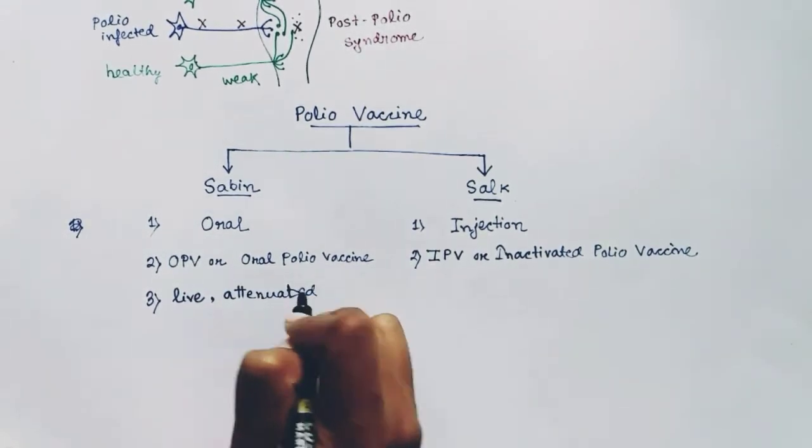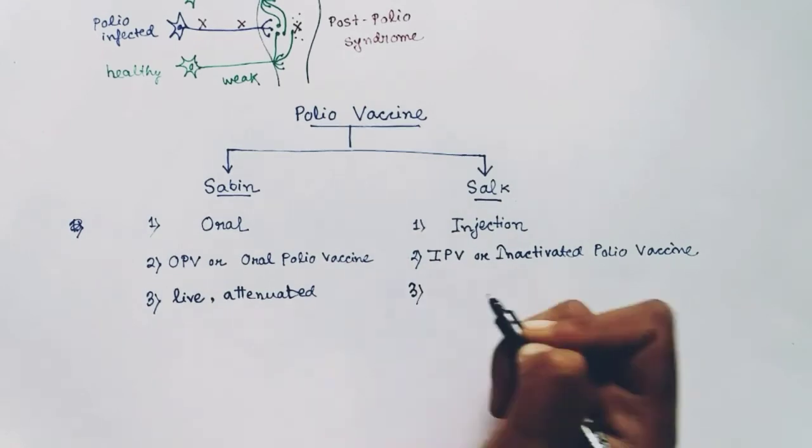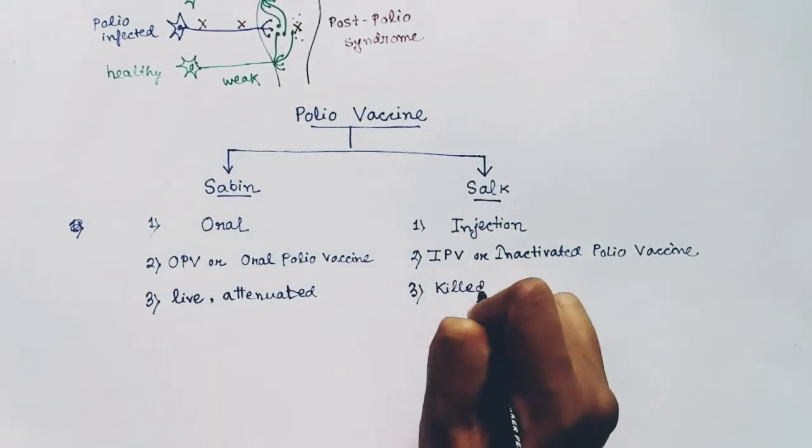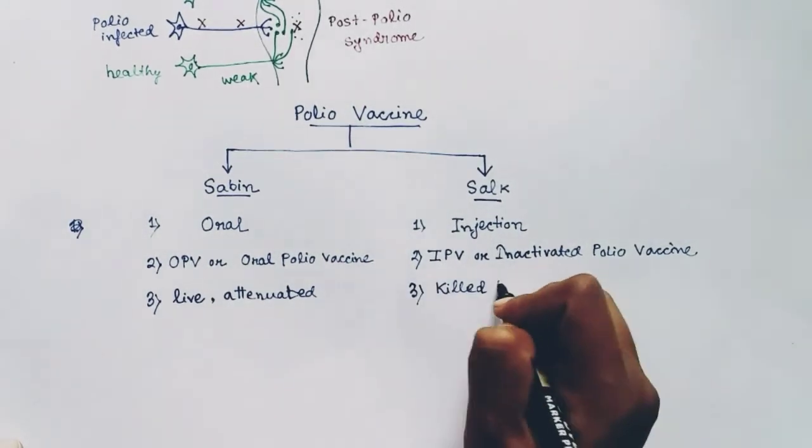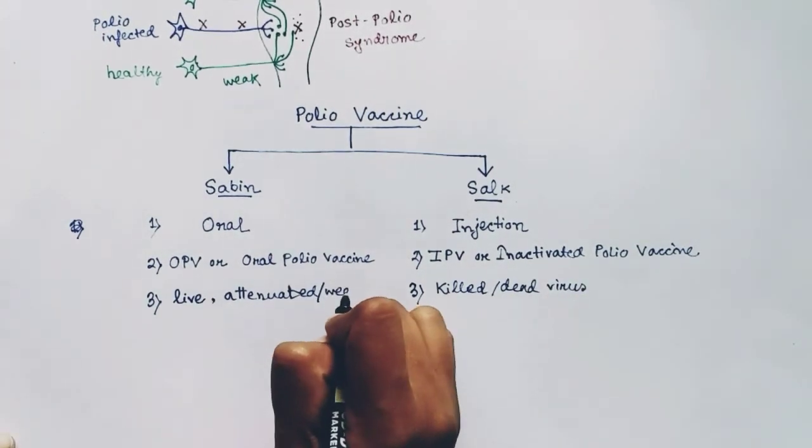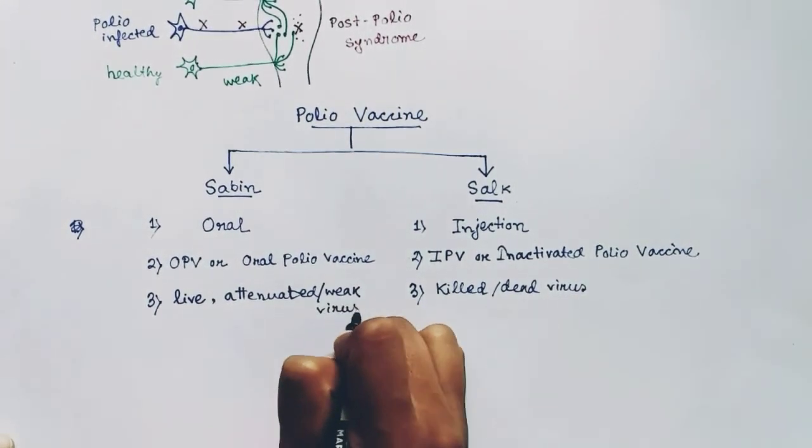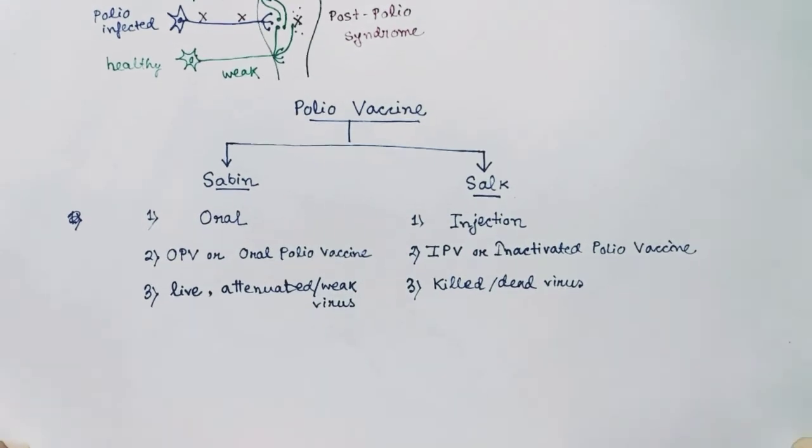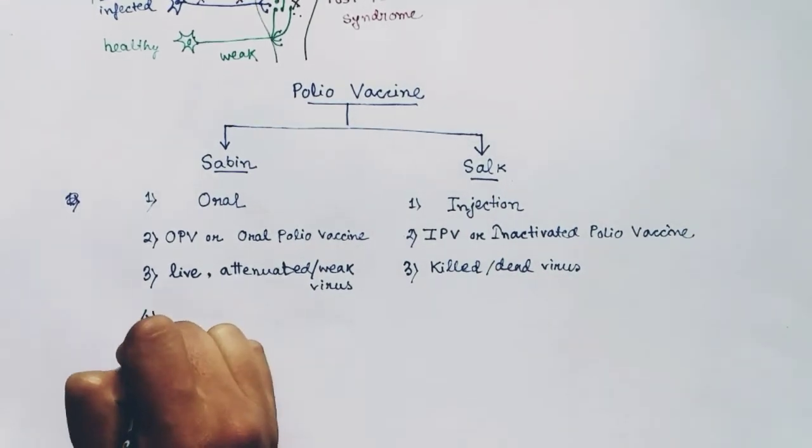The third difference between Sabin and Salk vaccine is that in the Sabin vaccine the virus used is the live attenuated virus, and in the Salk vaccine the virus used is the killed virus or dead virus.